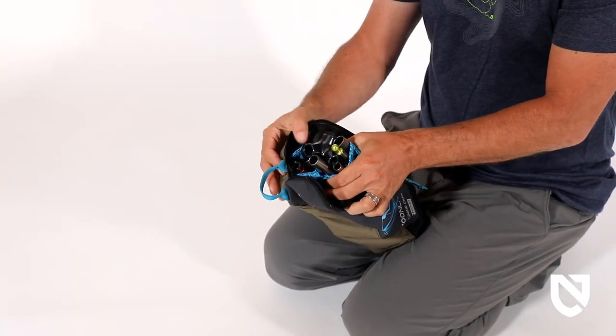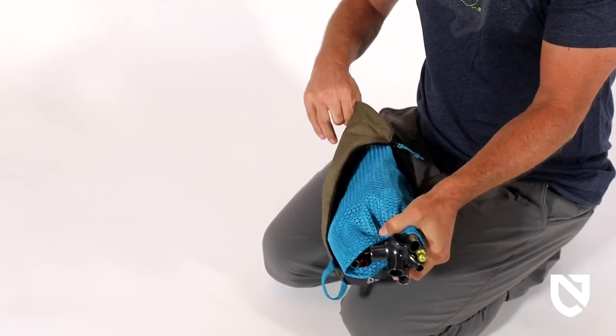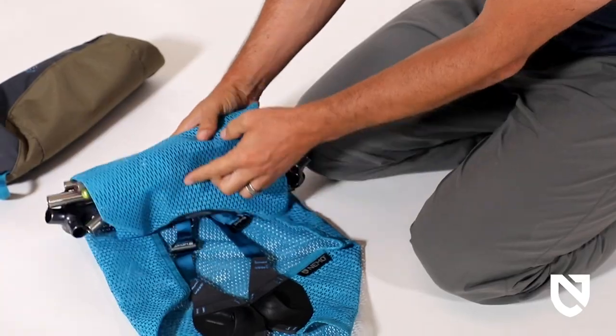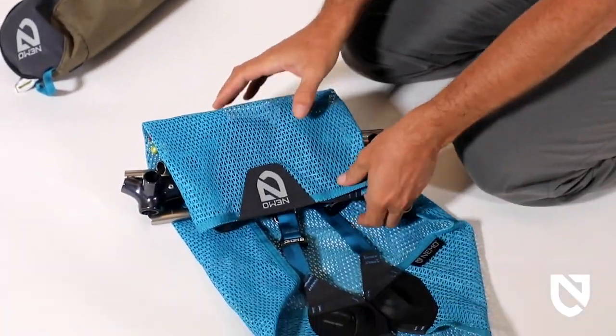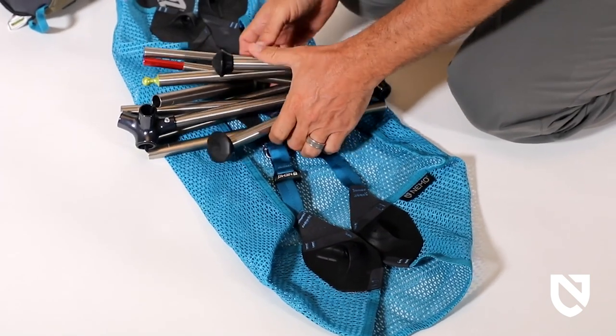When assembling the shock corded frame, it is important to always ensure all poles are properly seated and completely inserted into all corresponding hub and socket locations.